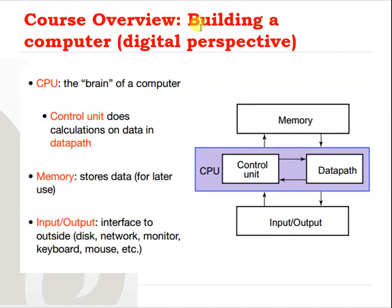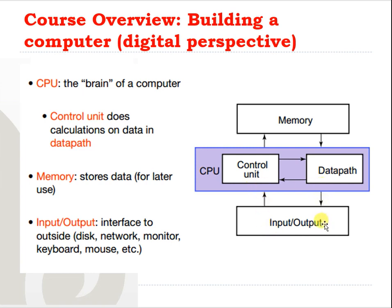Now let's have an overview of the course. Our aim is to build a simple computer from the digital perspective. We have the CPU at the heart — the brain of a computer. The CPU, or central processing unit, has a control unit which exchanges data with the datapath. The control unit performs calculations on the data in the datapath. The CPU also exchanges data with memory, which stores data for later use, and with input and output devices — reading from inputs and writing to outputs.